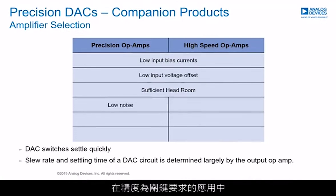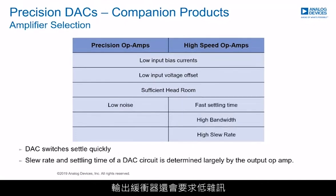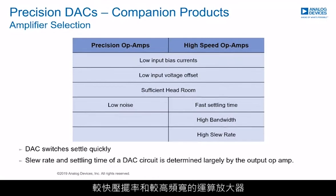In applications where precision is a key requirement, the output buffer also needs to offer low noise. Whereas in applications where higher speed is required, operational amplifiers with faster settling time, faster slew rate, and higher bandwidth should be selected. At the end of the day, the decision of the type of amplifier depends on the application.